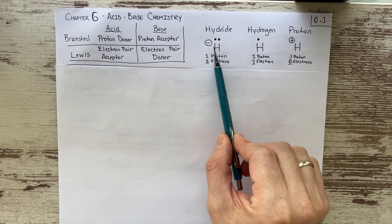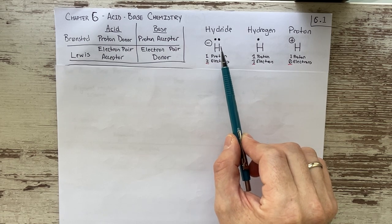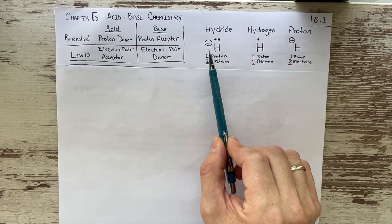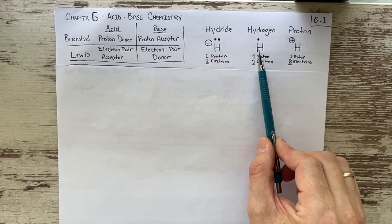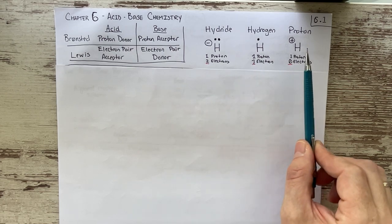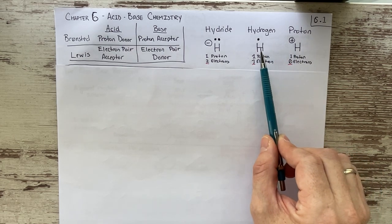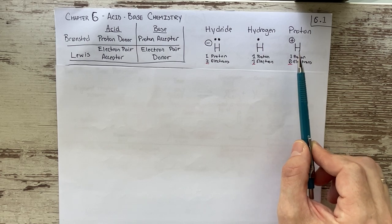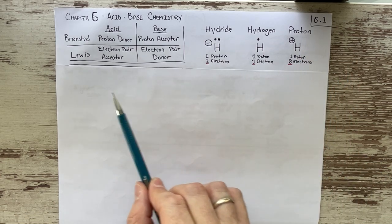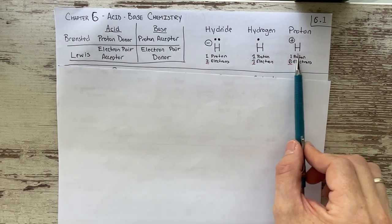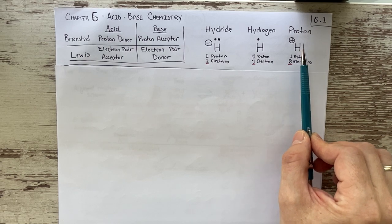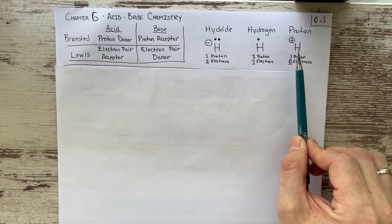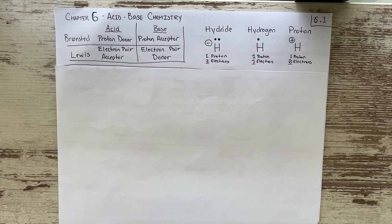A hydride is going to have one proton surrounded by two electrons and a formal negative charge. A hydrogen is really atomic hydrogen — one proton and one electron. A proton is just a hydrogen without any electron. When we talk about a proton being donated, we're thinking about the hydrogen on an atom, but when it's donated, it leaves its electrons behind, so only that particle in the middle of the atom is actually being transferred.